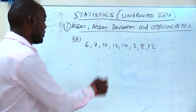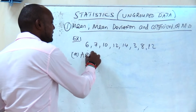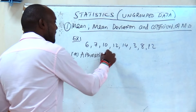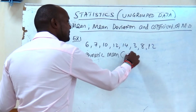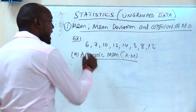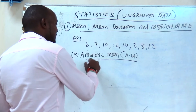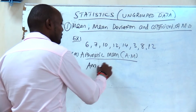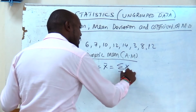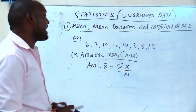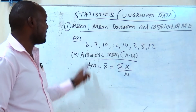I will start with the first method: arithmetic mean. I will use AM. How do we calculate arithmetic mean? The formula is X̄ equals the summation of X all over N. So in this case, you need to get the summation of X. This is common to everybody — how we calculate the mean.